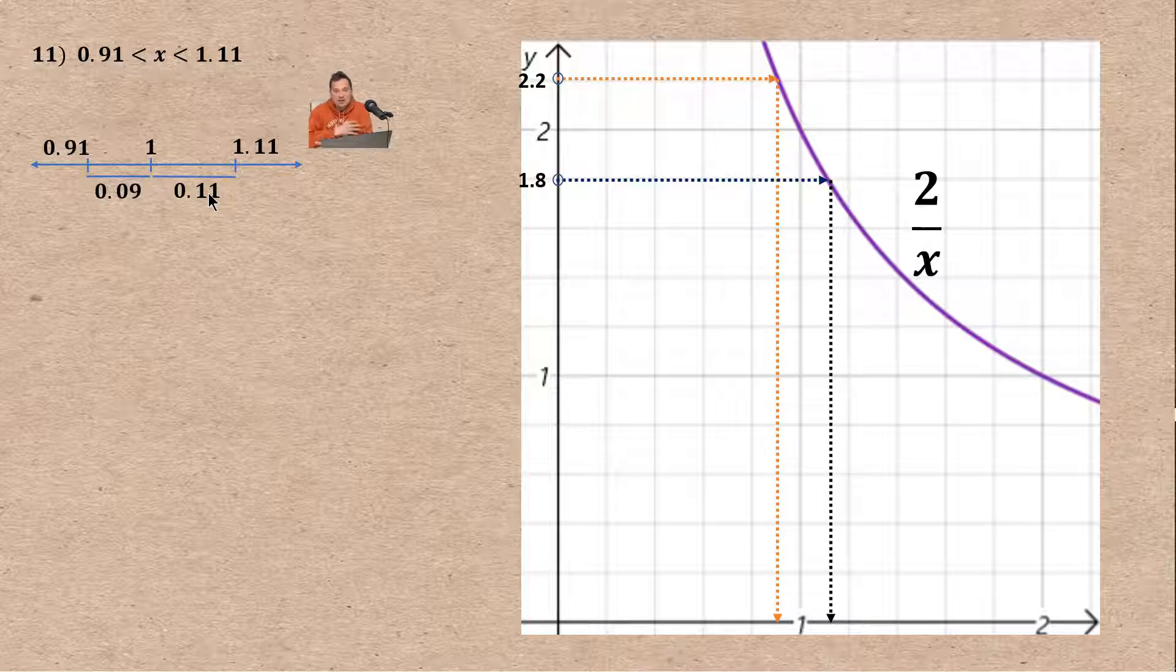We're doing the epsilon delta definition. In the first one we saw that the epsilon is basically 0.2, the spacing between the value of 2 and the 2.2 or the 1.8. But here you solve this inequality and the issue is you get two different values as spacings. You have to decide which is the correct one because that gives you the delta that you need.